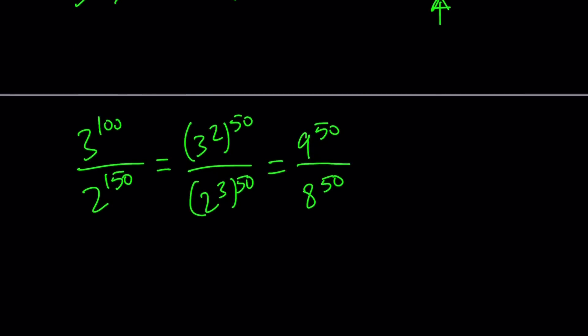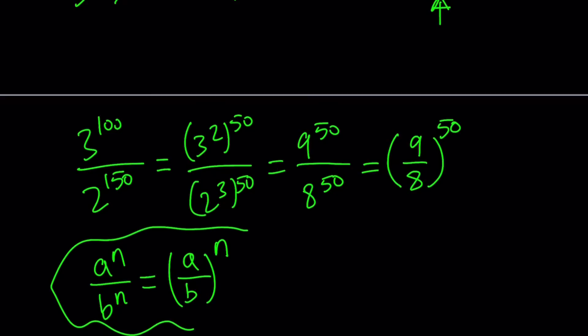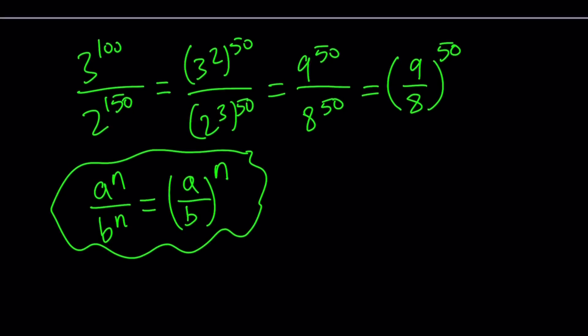That's where it comes from. And this allows us to write it as basically 9 to the power 50 divided by 8 to the power 50. Since these two numbers have the same exponent, we can go ahead and express them with the same exponent, a common exponent. So writing it like 9 over 8 as a fraction to the power 50.